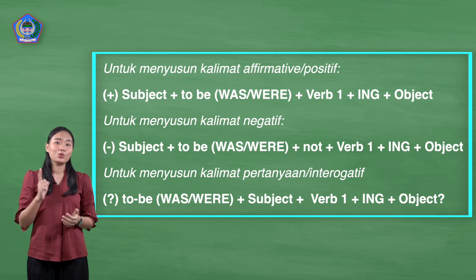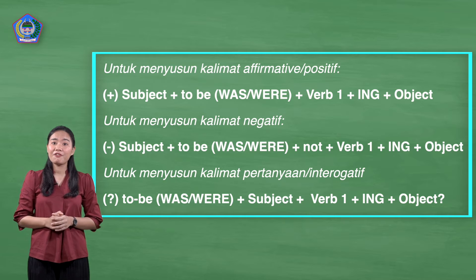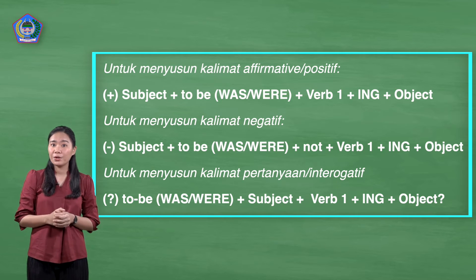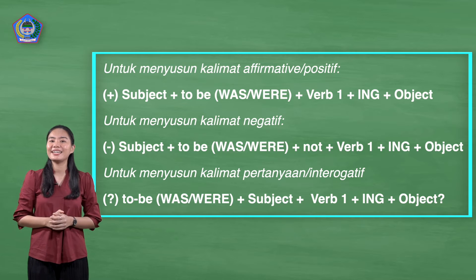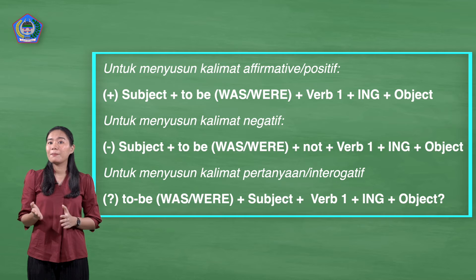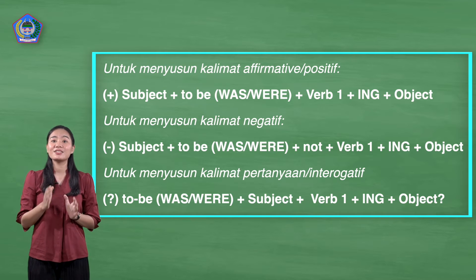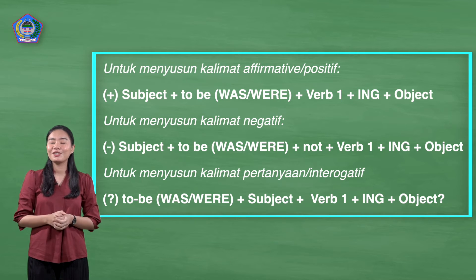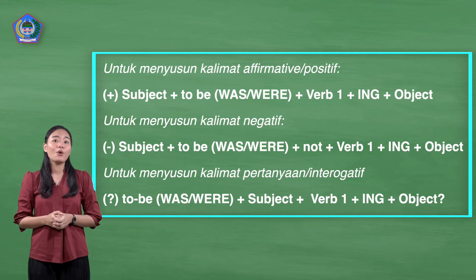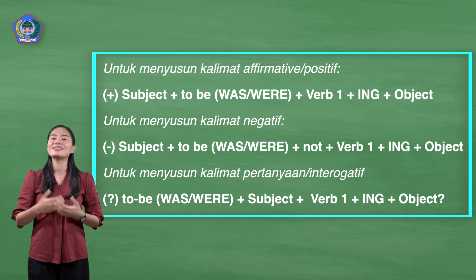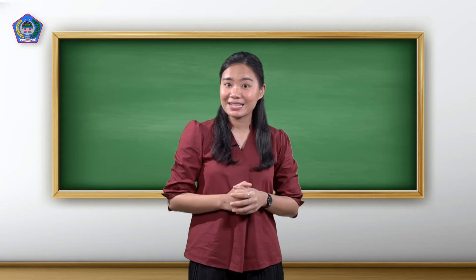Here's the formula. Untuk menyusun kalimat afirmatif atau kalimat positif, gunakan: subjek + to be (was/were) + verb one + -ing + object. Untuk menyusun kalimat negatif, gunakan: subjek + to be (was/were) + not + verb one + -ing. Dan untuk menyusun kalimat pertanyaan atau kalimat interogatif, gunakan: to be (was/were) + subjek + verb one + -ing + object. Let's try with some examples.